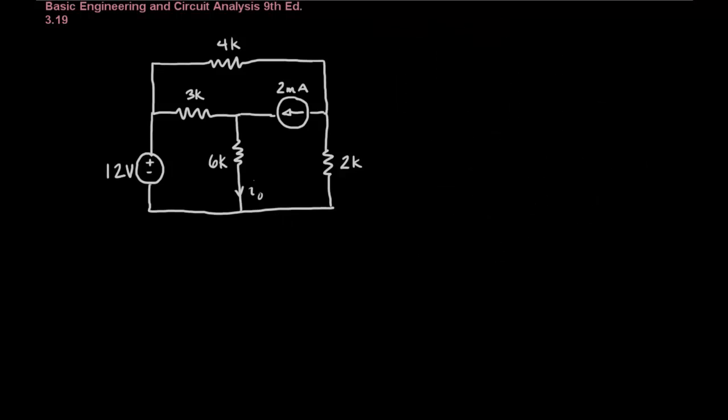So let's start doing that. So we'll assign our reference node down here at the bottom. And then we'll label and assign variables to the node voltages. So let's call this one V0, and then we'll call this one V1 and we'll call this one V2.